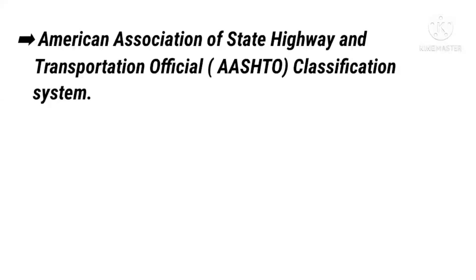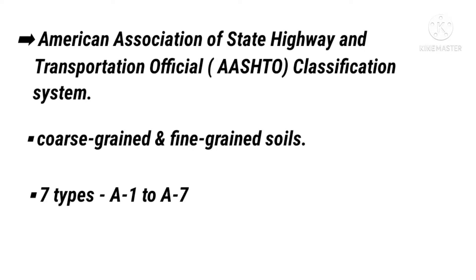In this video we discuss the American Association of State Highway and Transportation Officials (AASHTO) classification system, which is useful for classifying soils for highways. The particle size analysis and the plasticity characteristics are required to classify a soil. The classification system is a complete system which classifies both coarse-grained and fine-grained soils, and in this system these soils are divided into seven types.